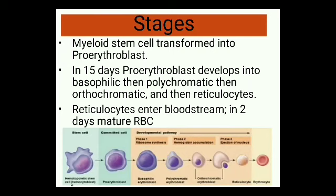The reticulocyte obtained from the late normoblast first matures for one to two days in the bone marrow, then is released into the peripheral blood stream where it takes another one to two days to mature into a mature RBC. As the cell matures, the nucleus becomes progressively smaller — from stem cell to late normoblast — and eventually disappears. We see ribosome synthesis, hemoglobin synthesis, and iron accumulation during this process.